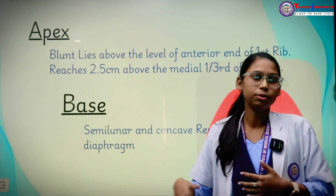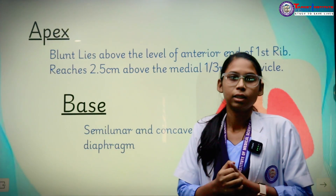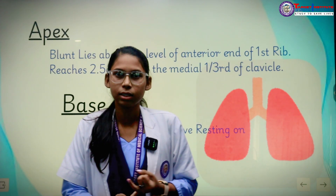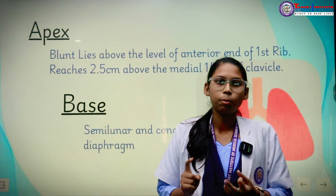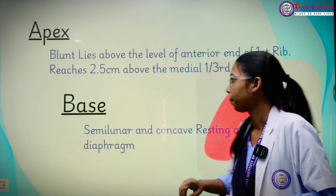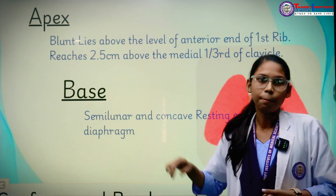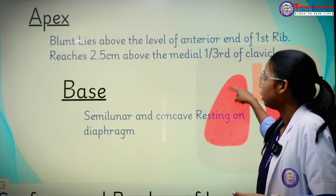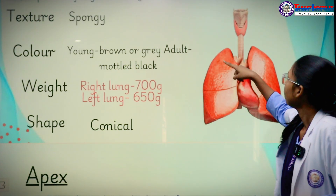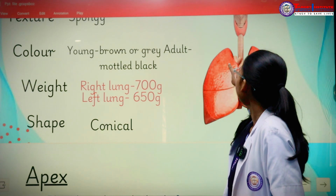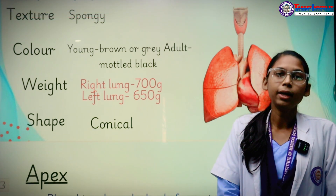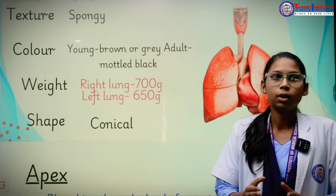The features of the lungs include an apex, a base, borders, and surfaces, which we will discuss. The apex is the upper end of the lungs. It lies anterior to the first rib and reaches up to 2.5 centimeters above the medial one-third of the clavicle. As we know, the clavicle shaft is divided into medial two-thirds and lateral one-third.